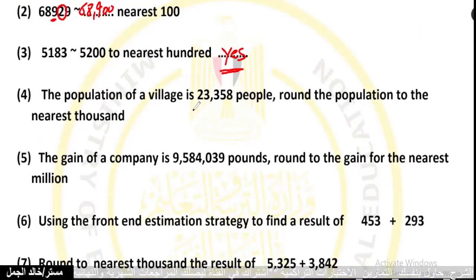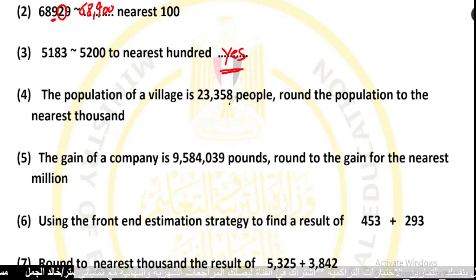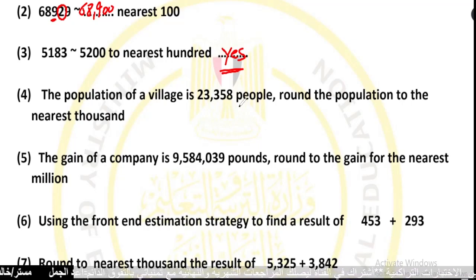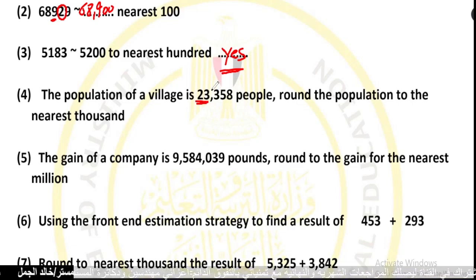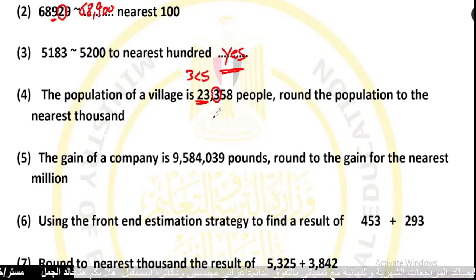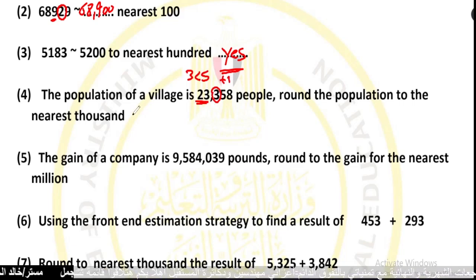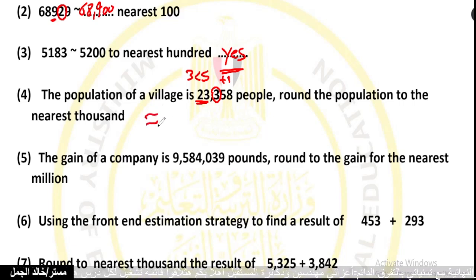The population of a village is 23,358 people. Round the population to the nearest thousand. The thousands place is 23. We look at the next digit: 3 is less than 5, so we add nothing. The population rounded to the nearest thousand equals 23,000.